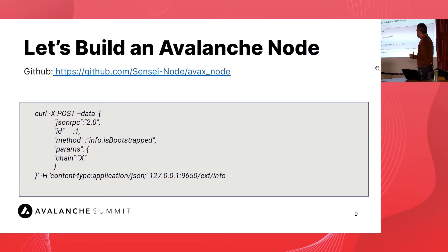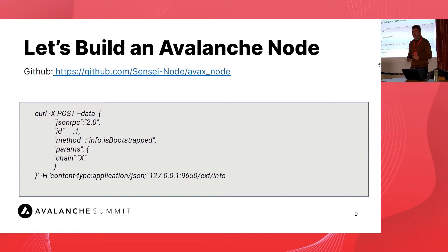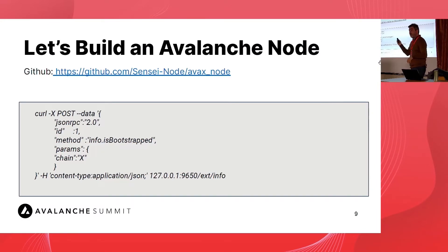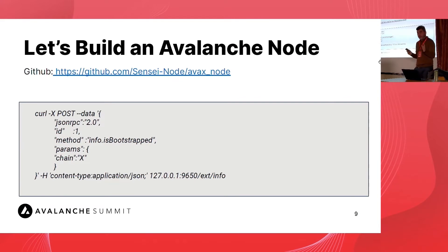You can query whether the X-Chain is synchronized — it will return a Boolean true or false. If true, it's synchronized; if false, you have to wait. You can build more sophisticated methods using Flask, Next.js, or whatever language you prefer to display the sync status on a website while it syncs. You also need to check the P-Chain and C-Chain — all three need to be synchronized in order for you to be able to validate.